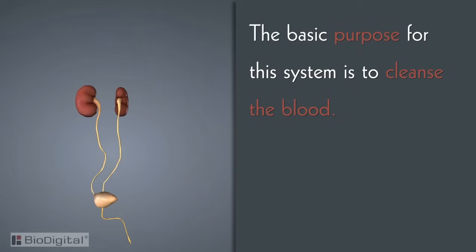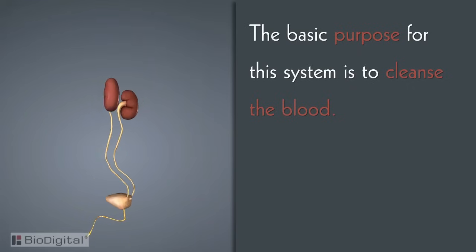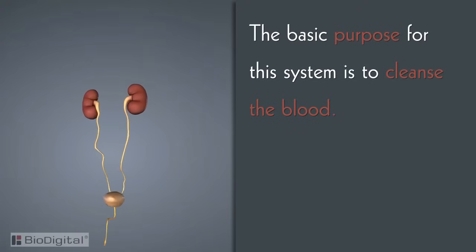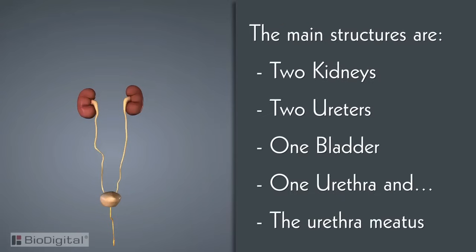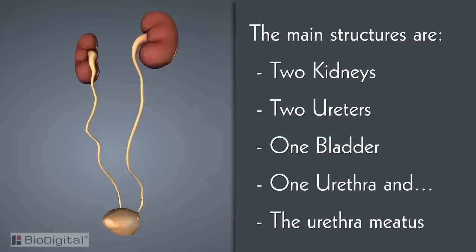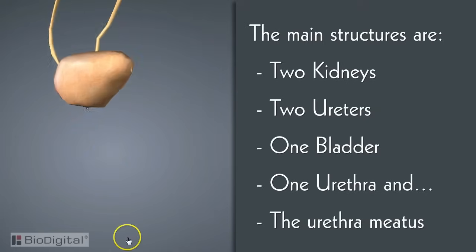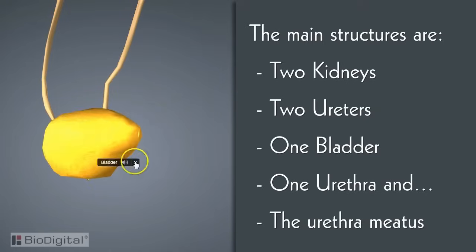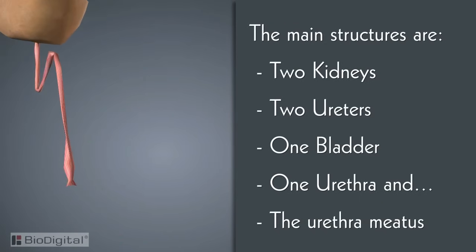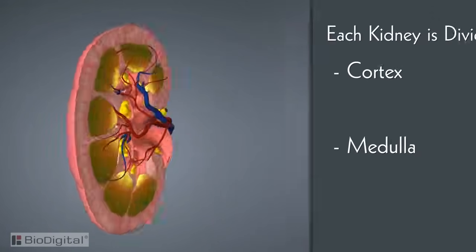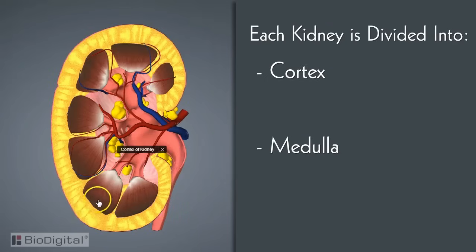Now before we finish, let's go over it one more time. The basic purpose of this system is to cleanse the blood — it filters out toxins such as excess sugars and salts, as well as other substances. The main anatomical structures are two kidneys, two ureters, one bladder, one urethra, and the urethral meatus. Each kidney is divided into the cortex and medulla.